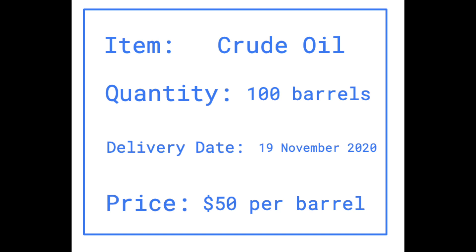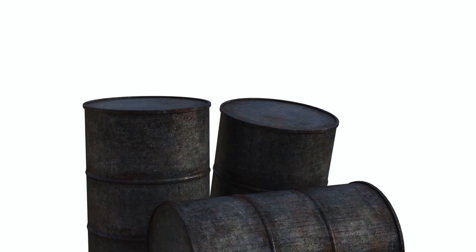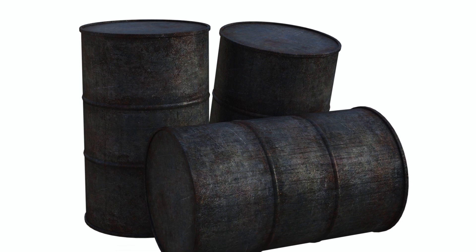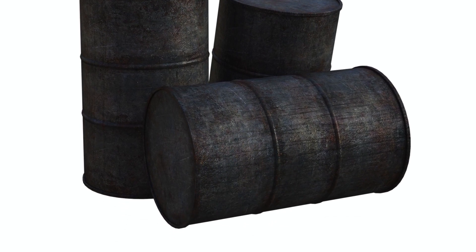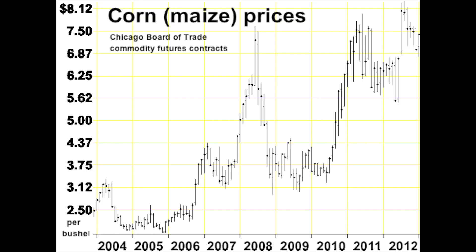For example, assume that two traders agree to $50 per barrel of crude oil. If the price at the end of a futures contract is $60 per barrel, this means that the buyer of a contract will make $10 per barrel whereas the seller will lose out on a better deal. Physical commodities such as crude oil and corn can be traded on a futures exchange, as can other financial instruments like currency or bonds.